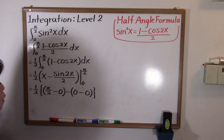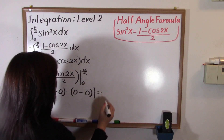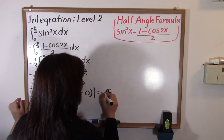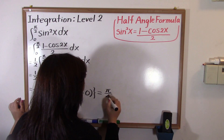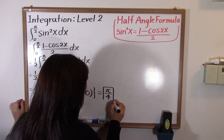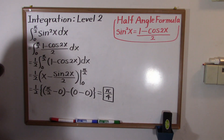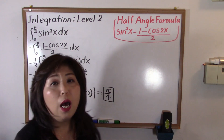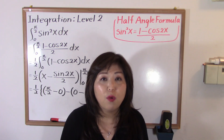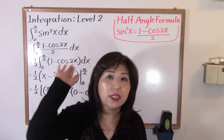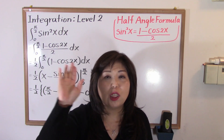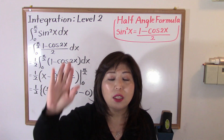We see zeros cancel out and the leftover is pi over two. So the final answer is one half times pi over two, which equals pi over four. That's it — the answer is pi over four! I hope today's lesson was helpful. See you next Monday — have a nice week, bye!